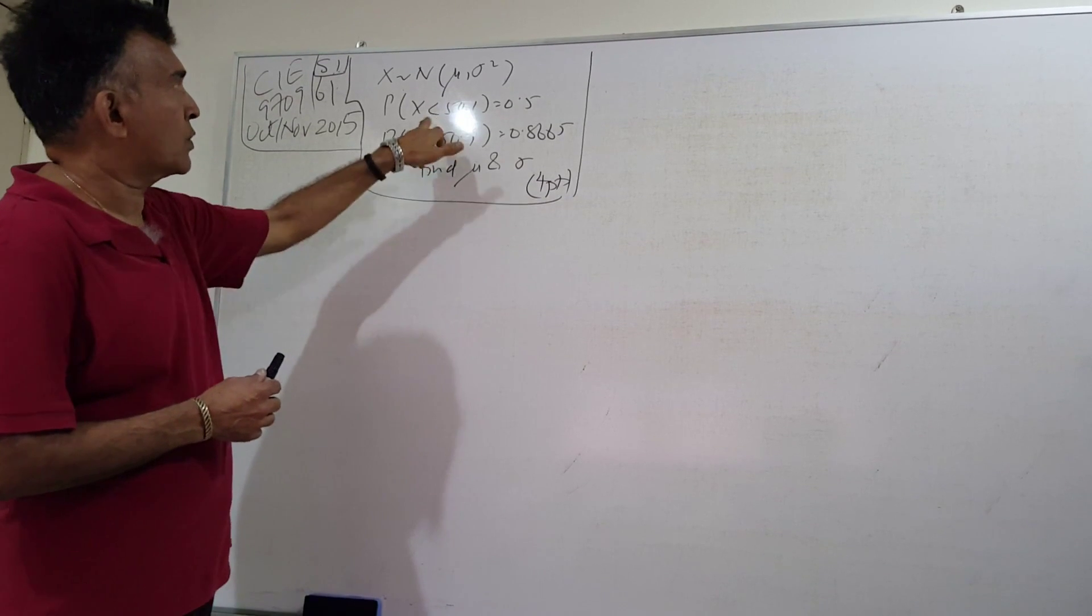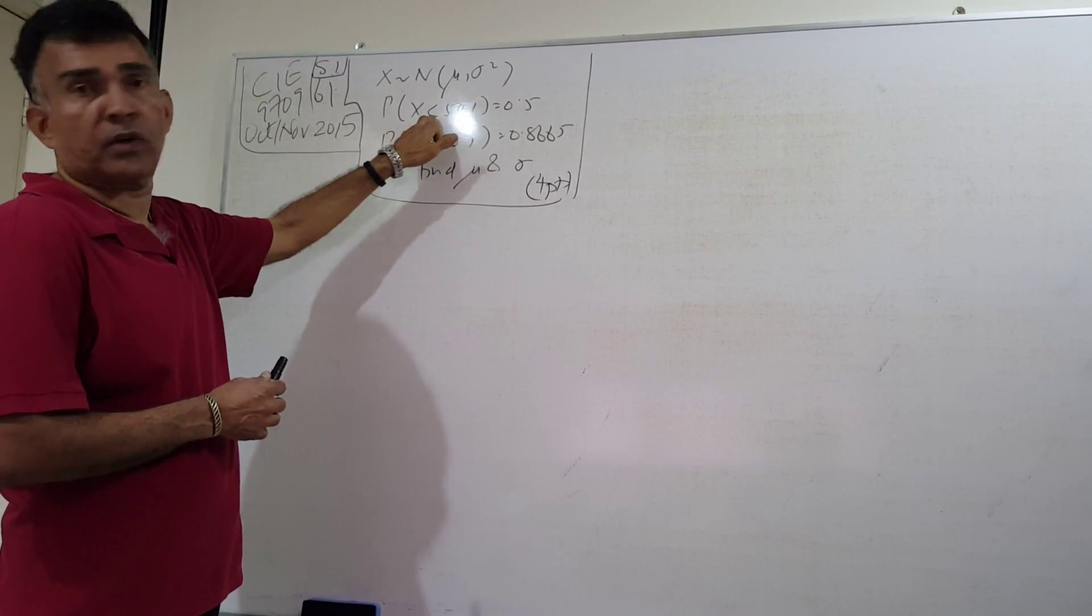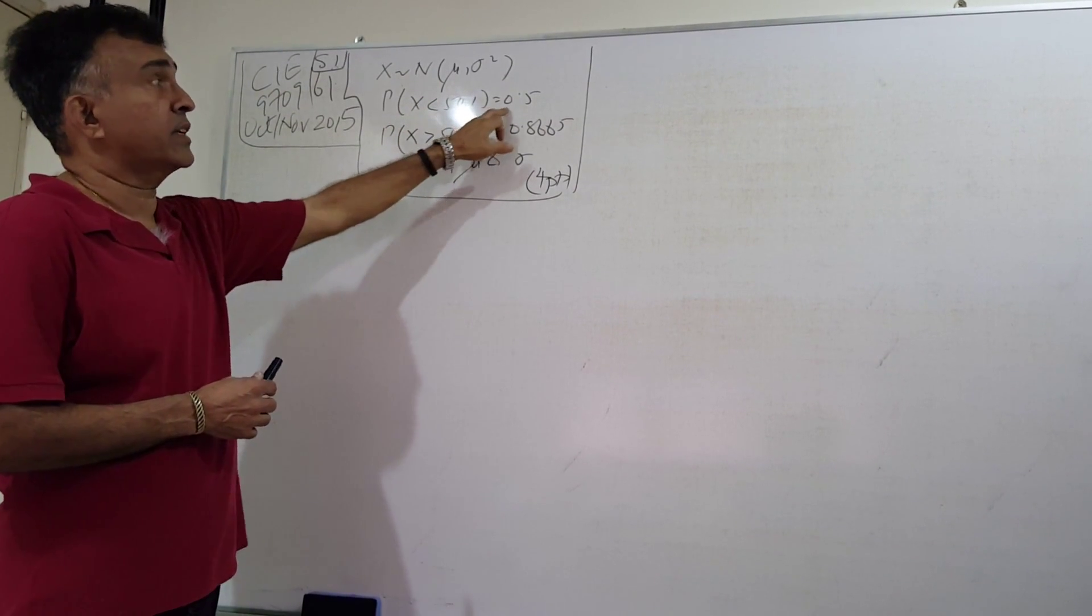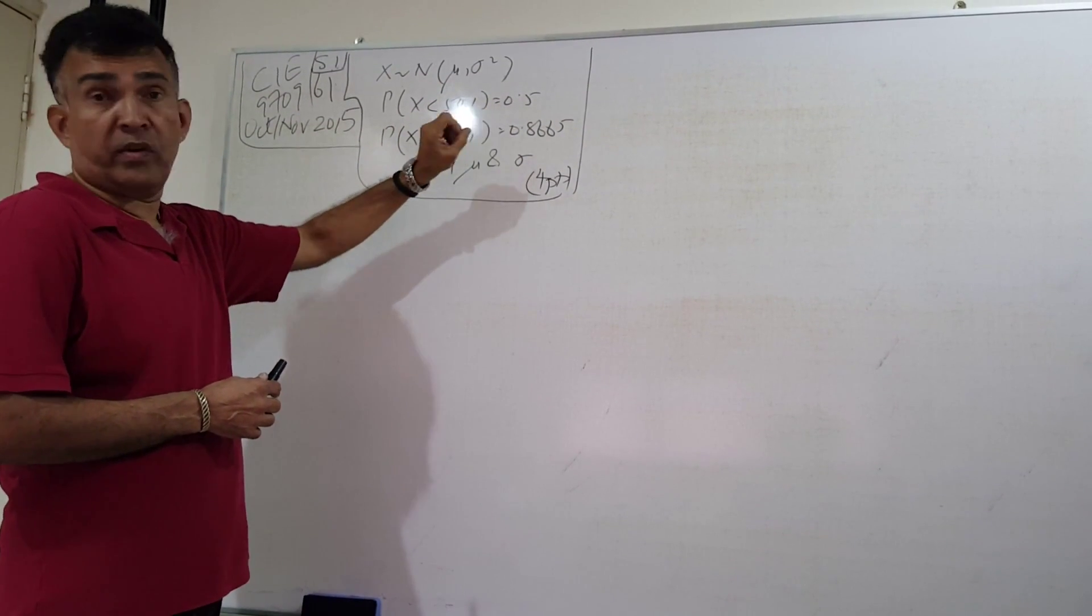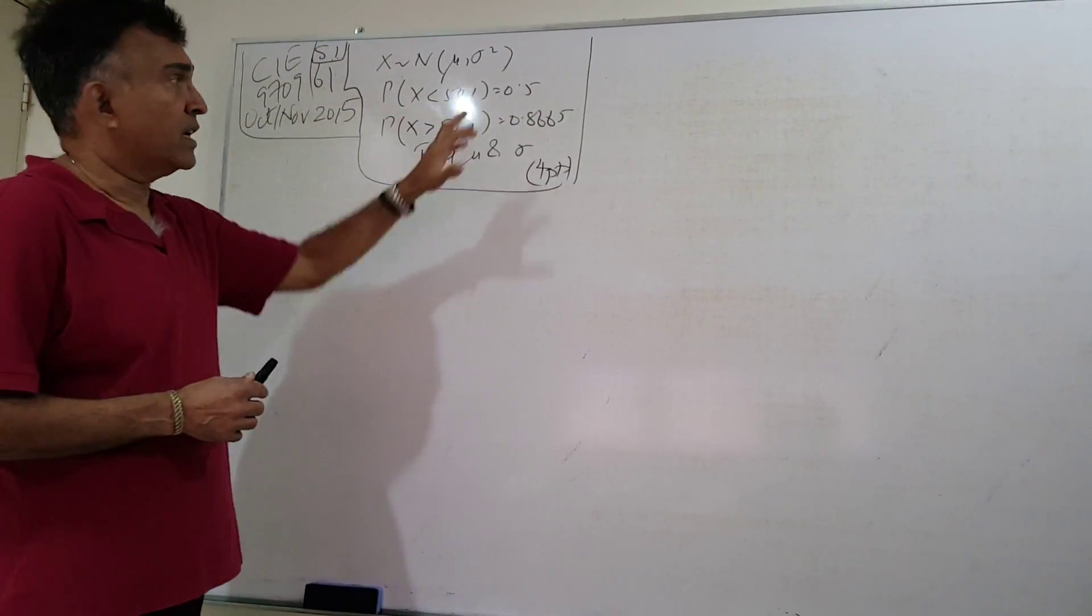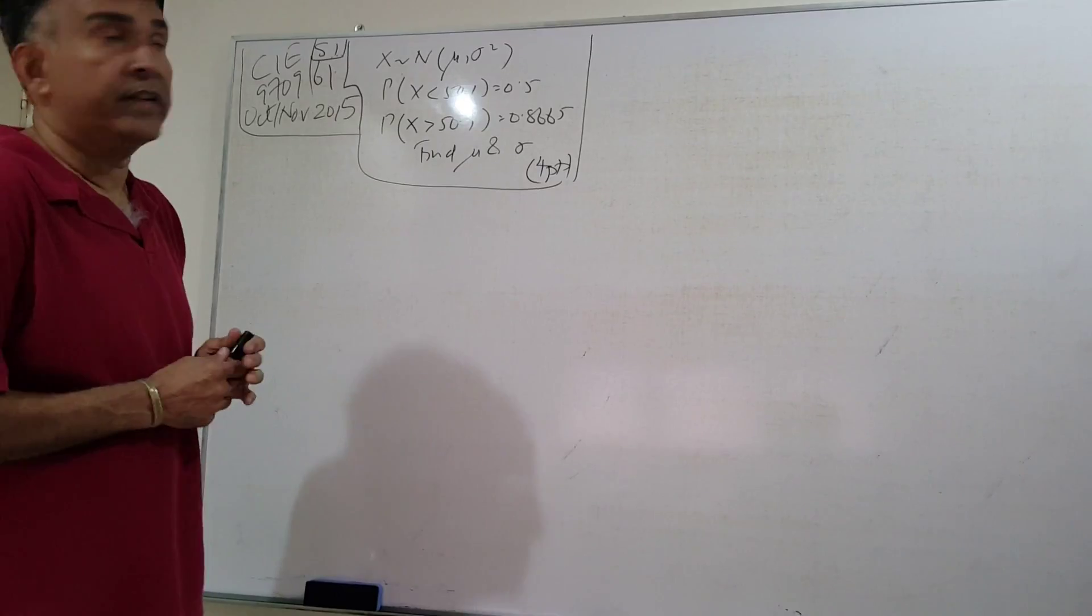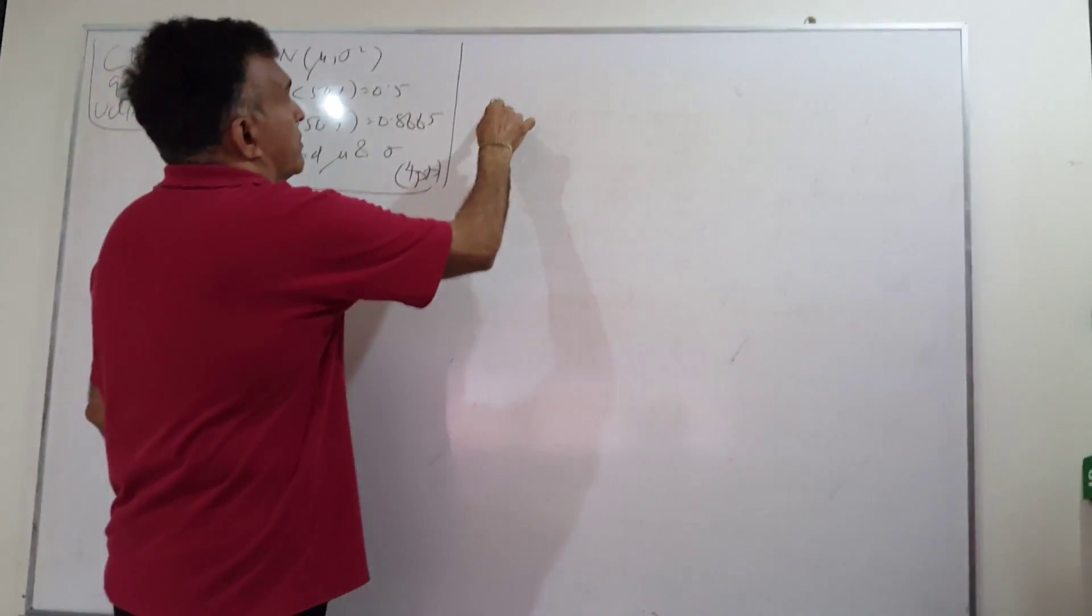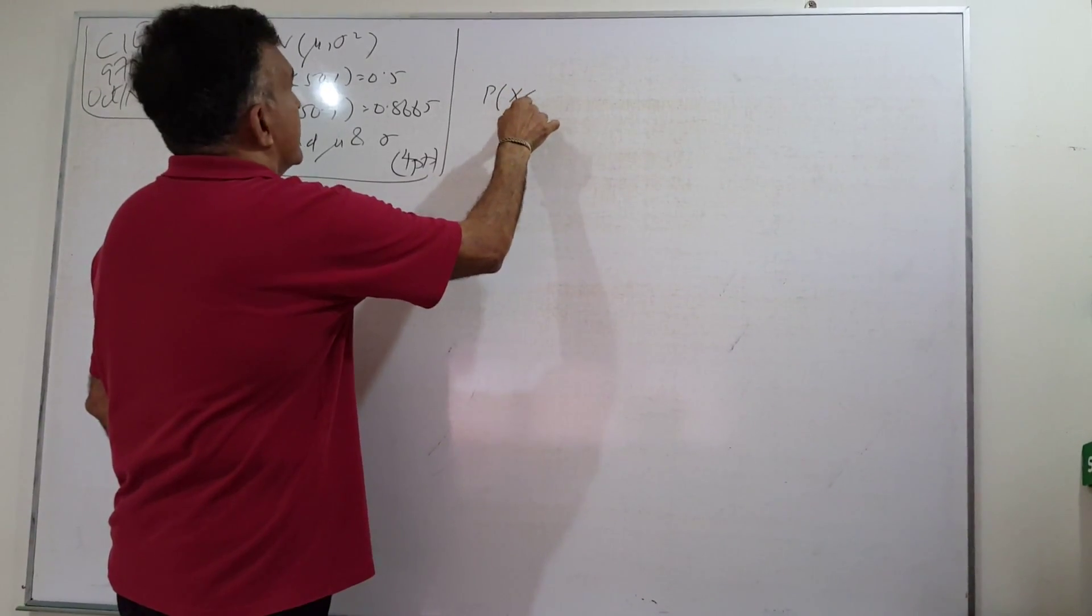I hope this part of the question, probability X less than 54.1 equals 0.5, rings a bell very quickly because we have probability 0.5. Let's write down the probability statement: probability that X less than 54.1 equals 0.5.